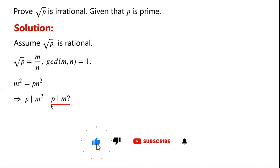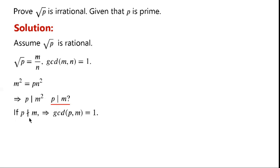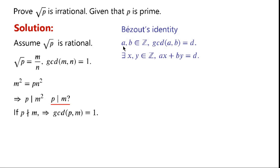Now we'll prove that if p is prime and p divides m squared, then p divides m. If p doesn't divide m, then the greatest common divisor of p and m is 1. By the Bezout identity, if a and b are integers and the greatest common divisor of a and b is d, then there exist x and y which are integers such that ax plus by equals d.